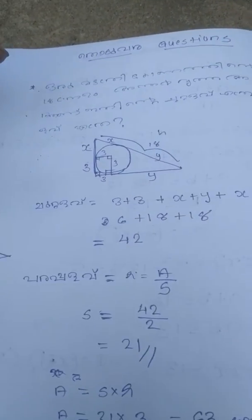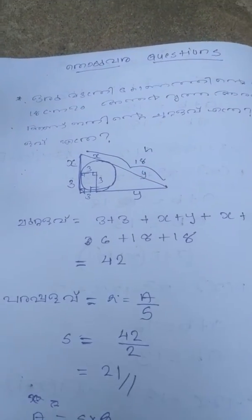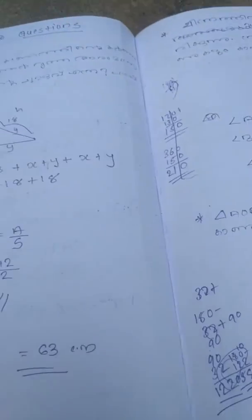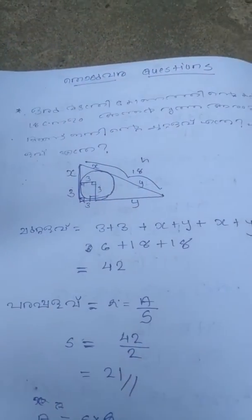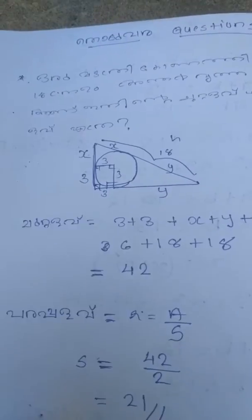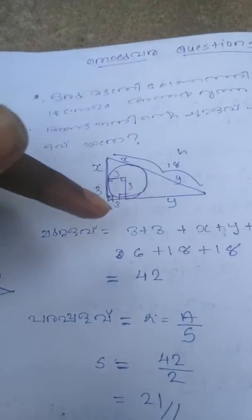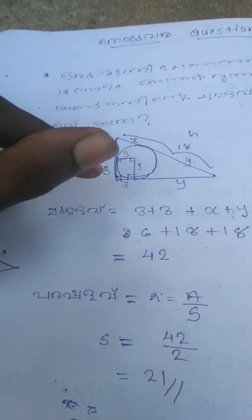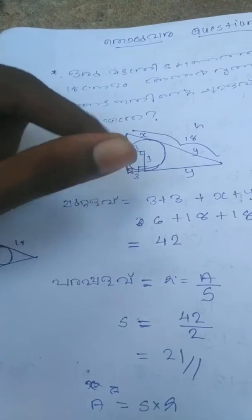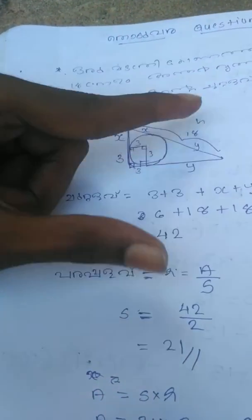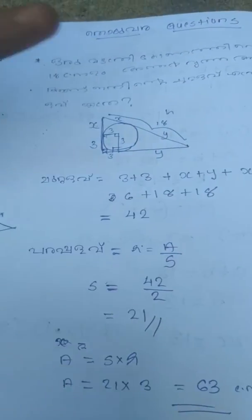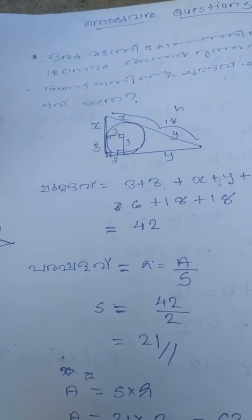One person said five centimeters and five centimeters. One is about nine years old. Now the figure is a little one — you see this? First of all, the other one is a perimeter.